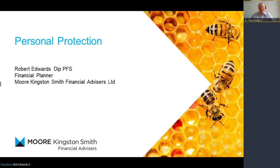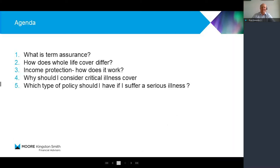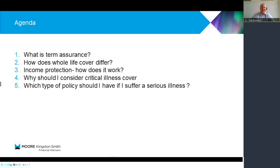Hello, my name is Rob Edwards. I'm a financial advisor for Moore Kingston Smith, and I'm going to talk to you today about personal protection and give you a bit of a whistle-stop tour. We're going to talk about what term assurance is, how whole-of-life cover works, look at income protection and how that works, then consider critical illness cover, and lastly look at the difference between critical illness cover and income protection.